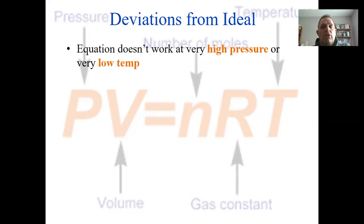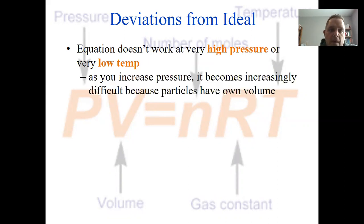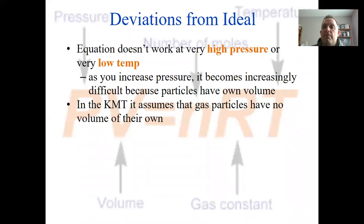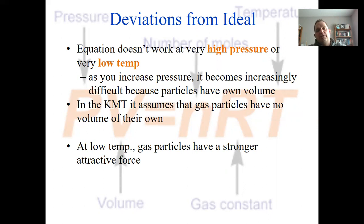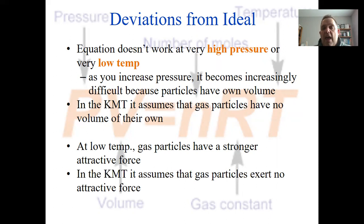The ideal gas law works almost all the time. The two times it doesn't work is high pressure or very low temperatures. As you increase the pressure, it becomes difficult for these particles to have their own volume. They're getting too squished together. That violates the kinetic molecular theory that said particles have no volume of their own. And then at lower temperatures, particles will start to have an attraction force toward each other. The kinetic molecular theory assumes that gas particles exert no attractive force to each other. I would know those two for sure and why.